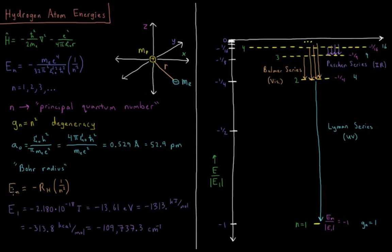The energy is also equal to the negative value of the Rydberg constant times 1 over n squared. The energy for the n equals 1 state, if you substitute in all these numbers, is negative 2.180 times 10 to the minus 18 joules.